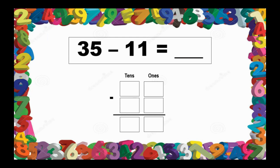Next, 35 minus 11. We write 35 in the place value chart: 5 in the 1s place and 3 in the 10s place. We also write 11: 1 in the 1s place and 1 in the 10s place. Subtract: 5 minus 1 equals 4, and 3 minus 1 equals 2. So, 35 minus 11 equals 24.